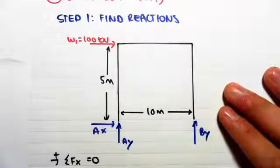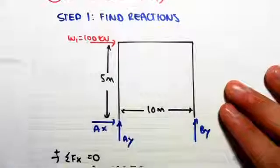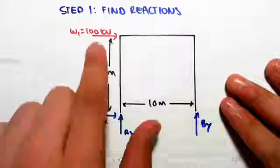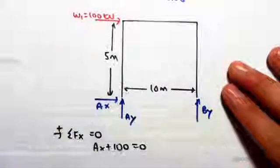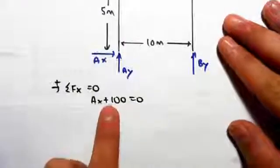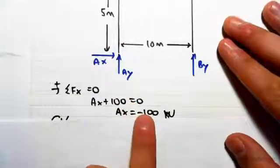Sum of the forces in the x direction, taking right as positive. So we have Ax and 100 both facing the right. So Ax plus 100 equals zero. Solving that we get Ax is minus 100.